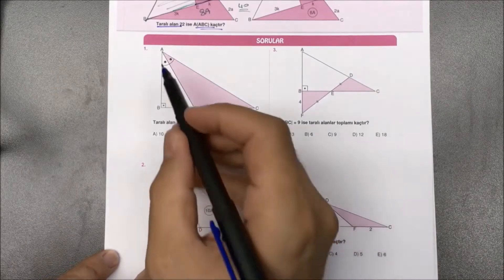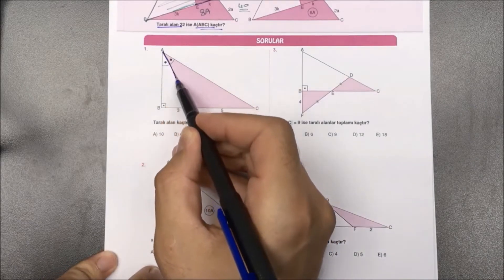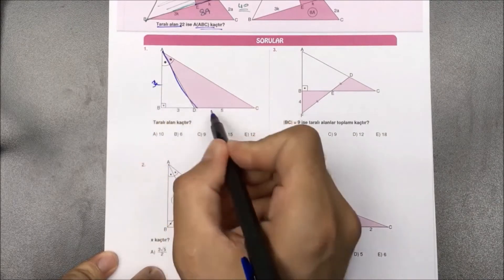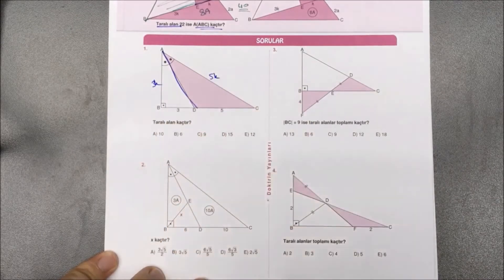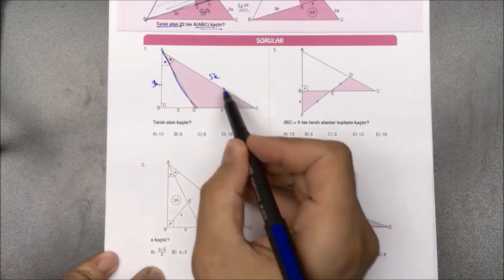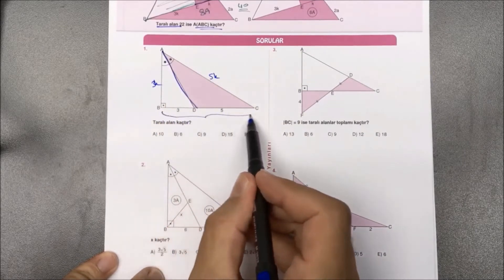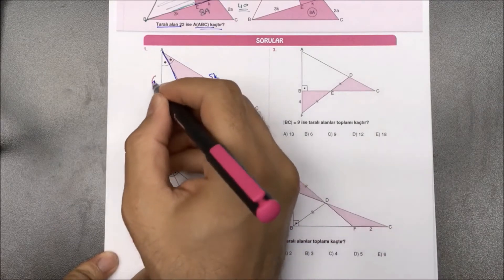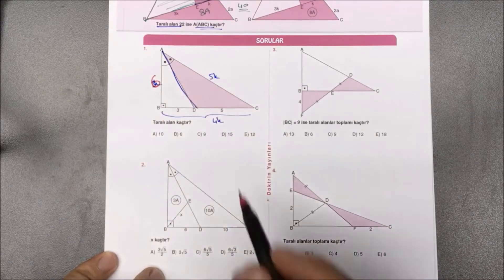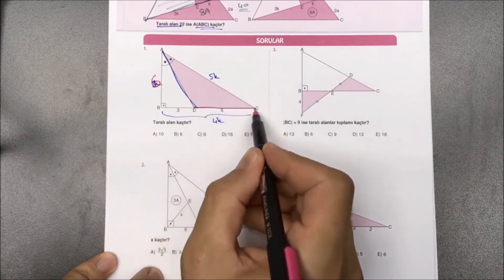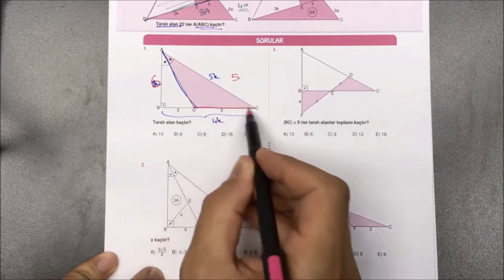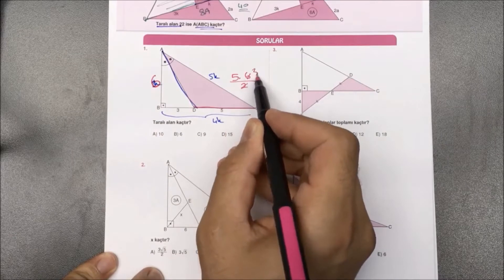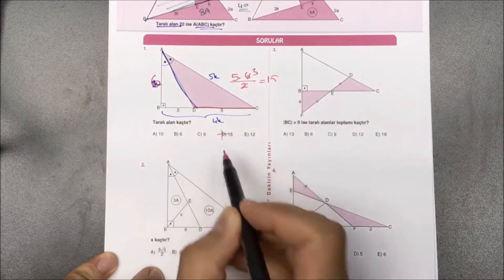Birinci örnekte açı ortay doğrusu verilmiş; 3'e 3'ün katı, 5'e 5'in katı geliyordu. 3-4-5 oranıydı; 4 kat dediğimiz yer 8 ise kat buradan 2 gelecek. 3 katta 6 gelecek. Taralı üçgenin bilinen kenar uzunluğu 5, yüksekliği 6; 6 bölü 2 yaparak aradığımız yanıt 15 olarak bulunur.